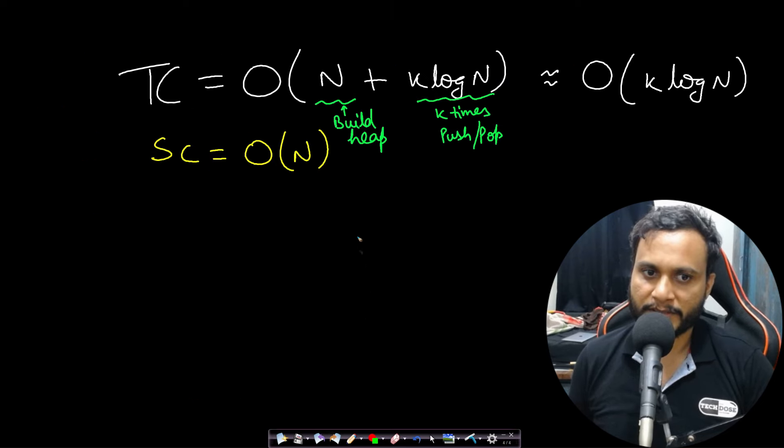So k times log of n, because n is the number of items. The time complexity in this case is n plus k log n, which equals k log n. Or you can also keep it as n plus k log n because n and k are not dependent. The space complexity is order of n. Let's now look at the code.